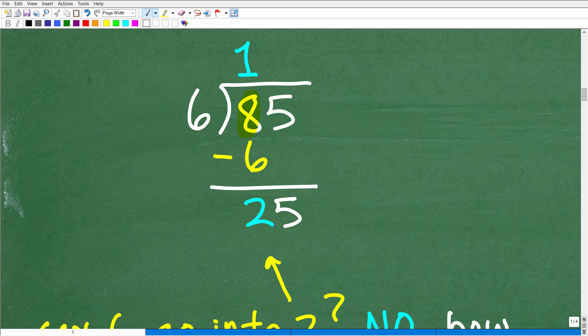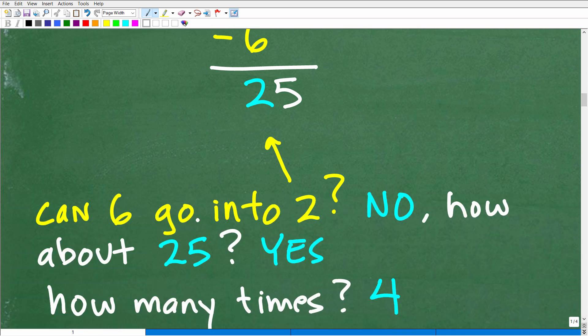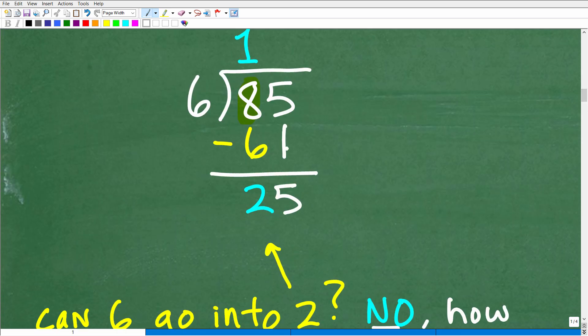We said can 6 go into 8? Yes, it goes in one time. 1 times 6 is 6. We subtract that 6 away from 8, that's 2. So now we're going to ask ourselves the following: we're looking at this 2 there, we're basically going to repeat the procedure. Can 6 go into this 2? Well, the answer is no. It cannot go into 2. We can't fit 6 into 2. So what we need to do is drop this 5 down.